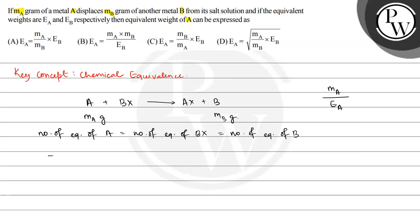We can write: number of equivalents of A, that is ma/Ea, is equal to number of equivalents of B, that is mb/Eb.